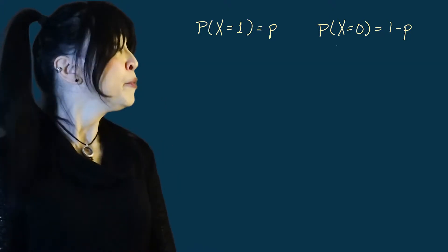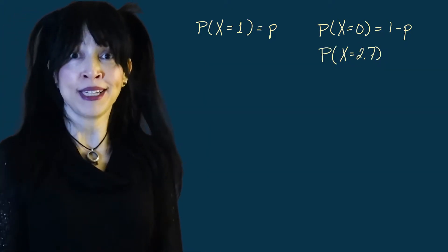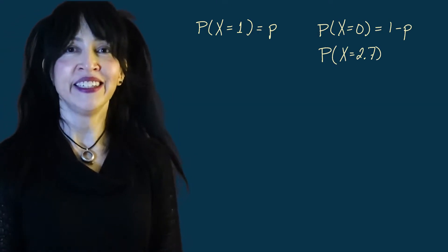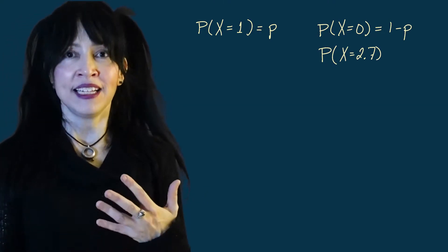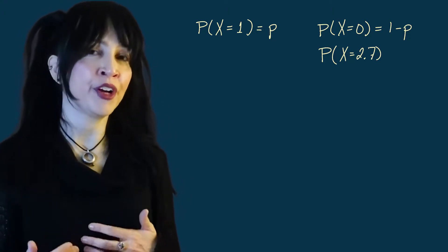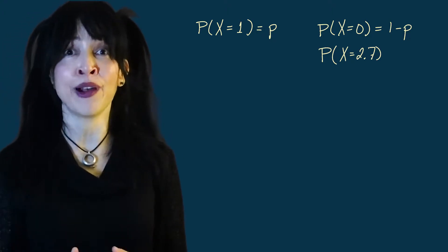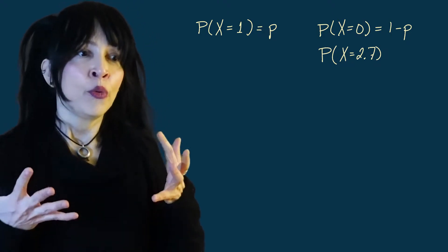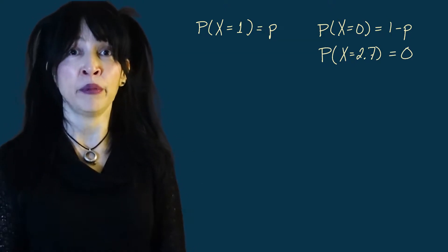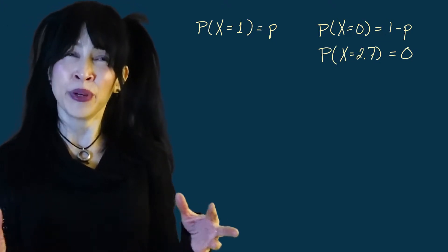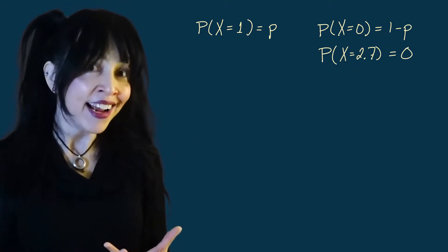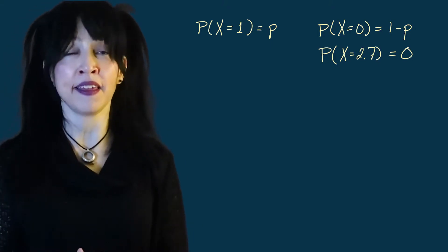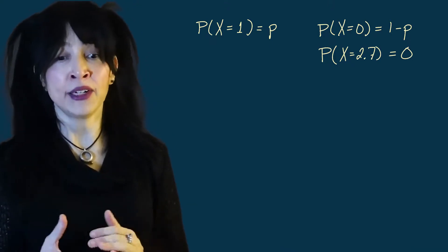But what about the probability that X is 2.7? Not going to happen. Our coin gives us heads or tails, and we assign the random variable one or zero — we're never going to see 2.7. But that's okay; we'll just say that happens with probability zero. So the probability of seeing 2.7, or really anything other than zero and one, is zero.